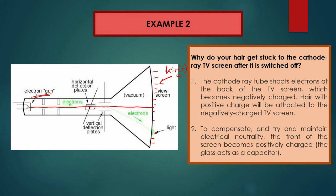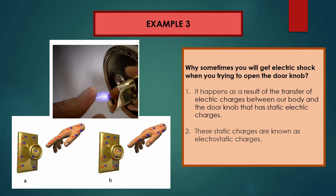To compensate and maintain electrical neutrality, the front of the screen becomes positively charged so that it repels your hair. Have you ever experienced an electric shock when trying to open a door knob? Our hands have some charges and the door knob also has charges. When you touch it, electrons and protons transfer between each other — this process of transferring electric charges causes you to experience an electric shock.